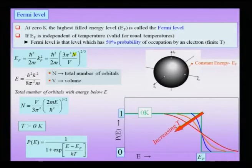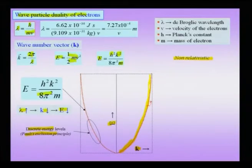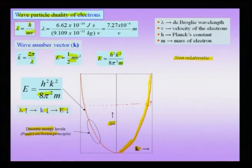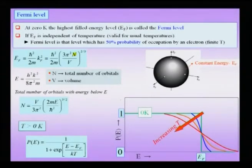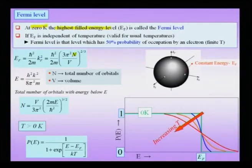Suppose we start filling electrons — if there are n number of orbitals which need to be filled, there will obviously be a highest energy level which is filled. All the electrons in the solid fill up to a certain energy level, meaning all states below this energy are filled by electrons. This topmost energy level which is filled is called the Fermi level, and the concept of Fermi level is defined as the highest energy level filled at 0 Kelvin.